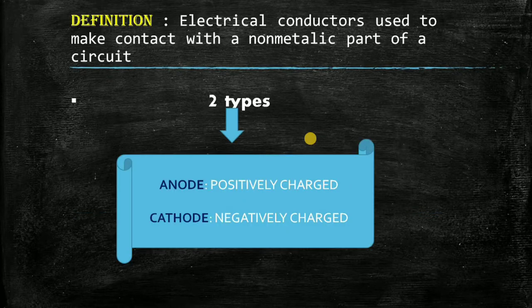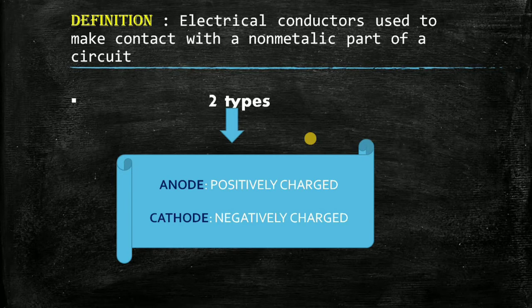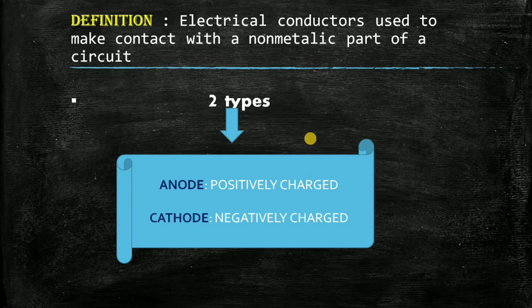Before we start to learn about electrodes, we should have knowledge about what are electrodes. Electrodes are electrical conductors used to make contact with a non-metallic part of a circuit. For example, our body contains fluid with ions that allows electrical conduction.